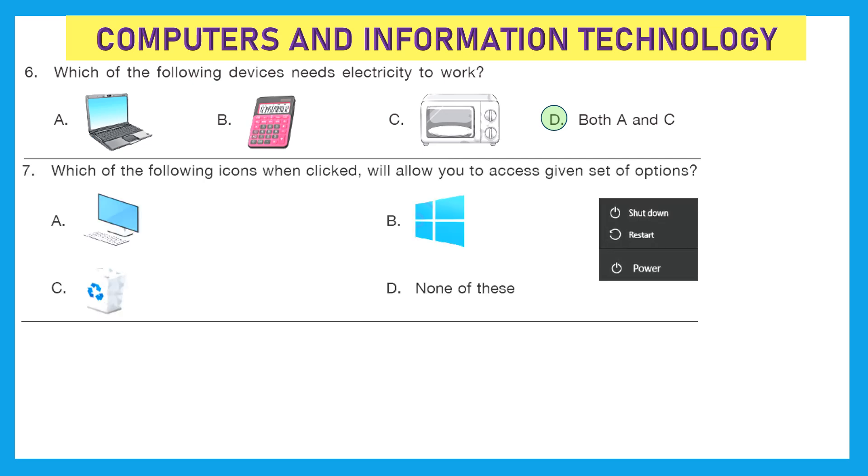Question 7: which of the following icons when clicked will allow you to access given set of options? Let's see the options, it's shut down, restart power. It looks like we are talking here about the start button and which one is the start button? It is option B. Option B icon talks about start button and we get these options when we click on it.